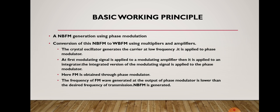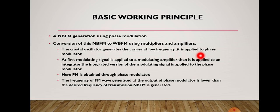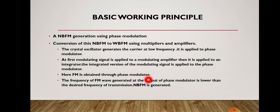Let us see the explanation slide. The basic working principle is: first, narrow band FM generation using phase modulation; second, conversion of this narrow band FM to wide band FM using multipliers and amplifiers. The crystal oscillator generates the carrier at low frequency and it is applied to the phase modulator. The modulating signal is first applied to a modulating amplifier, then to an integrator. The integrated version of the modulating signal is applied to the phase modulator, where FM is obtained through phase modulation.